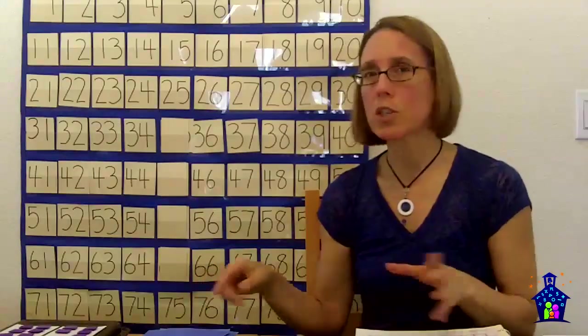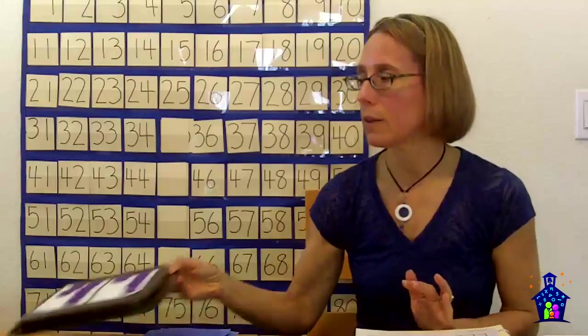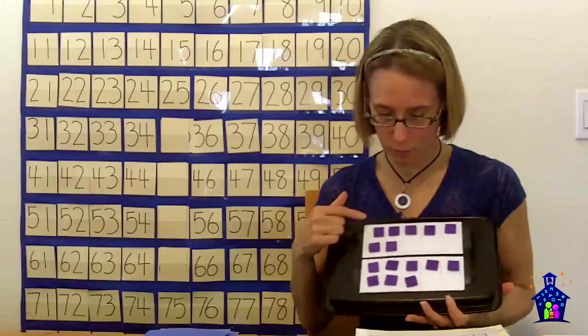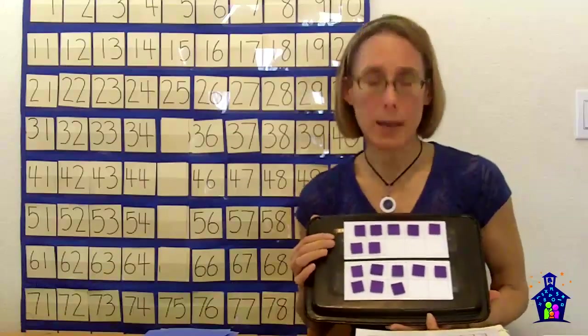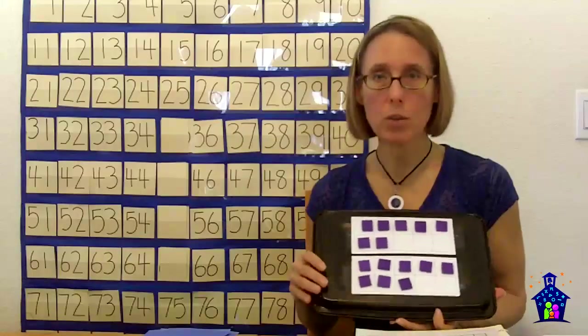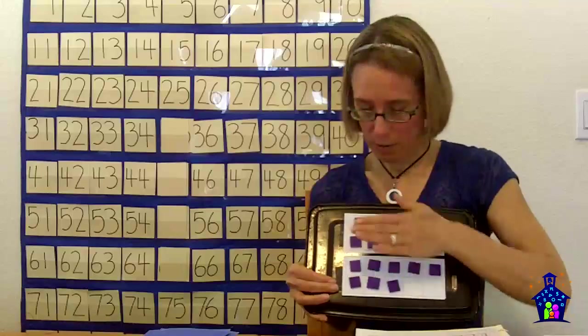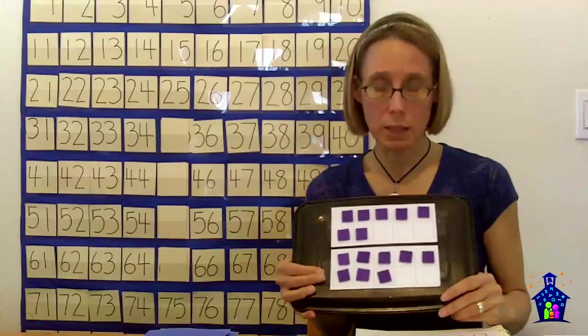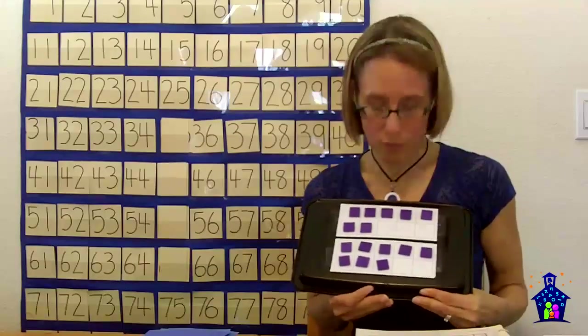Once they're comfortable doing that, we move on to the two ten frames or the 20 frames. This could be first grade. Now we're going to be studying our addition facts and we're going to use strategies. They're very comfortable with figuring out very quickly what that is because we've done a lot of that work before. Now I'm going to put two together and they need to tell me how many are all together.